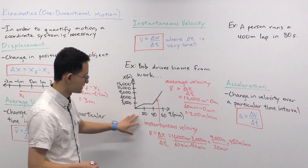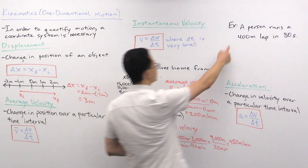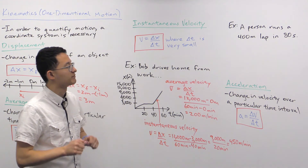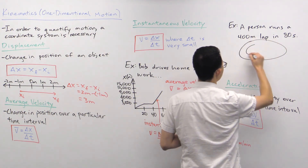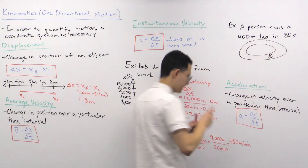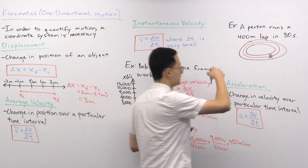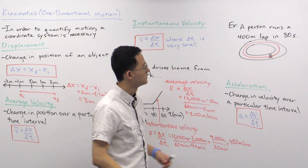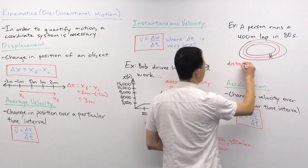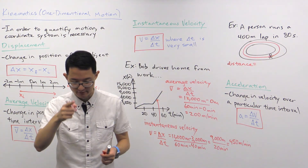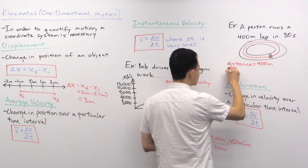Let's look at another example. A person runs a 400-meter lap in 80 seconds. We can draw this out: we've got a lap and a person starting at the beginning, running the entire lap around the track. The first thing to consider is distance. The distance traveled is 400 meters, since they ran the full 400-meter lap.